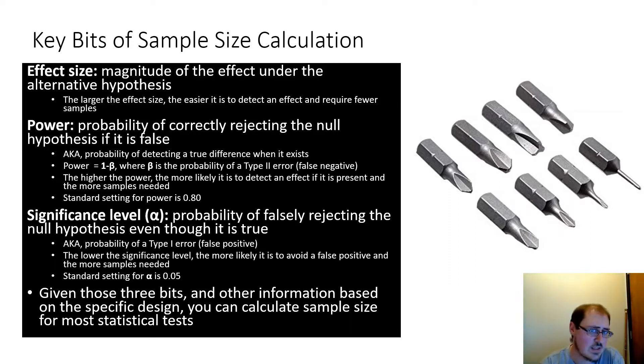The default is 0.8, so we'll be using that throughout this module. Now the next thing is significance level, also known as alpha. It's the probability of a type 1 error, also known as a false positive. So the lower the significance level, the more likely to avoid this false positive, but then you need more samples.